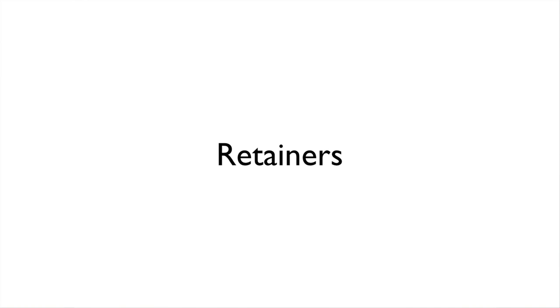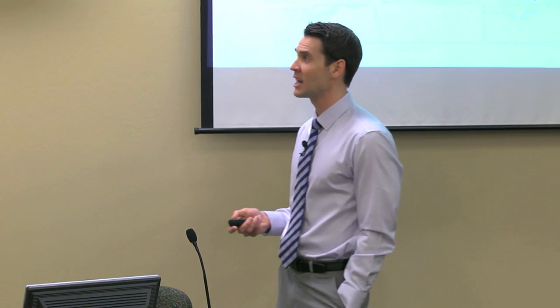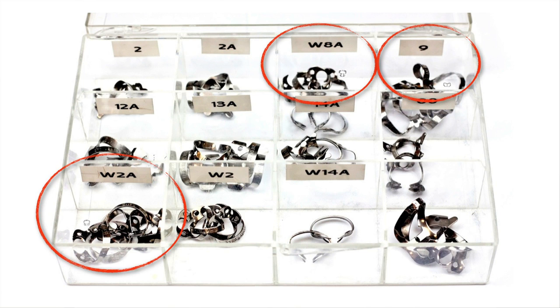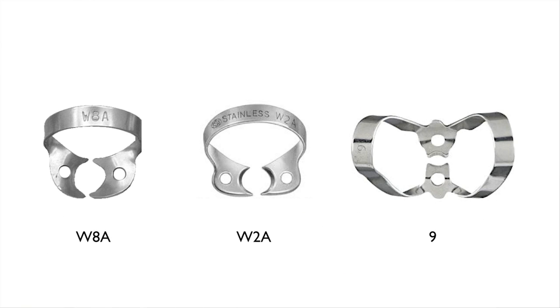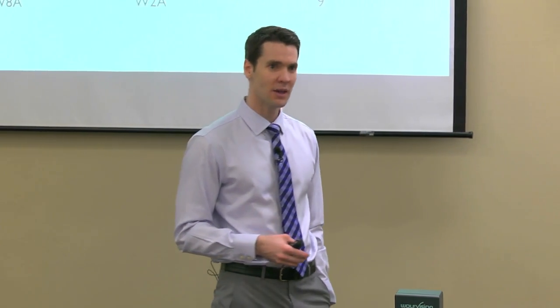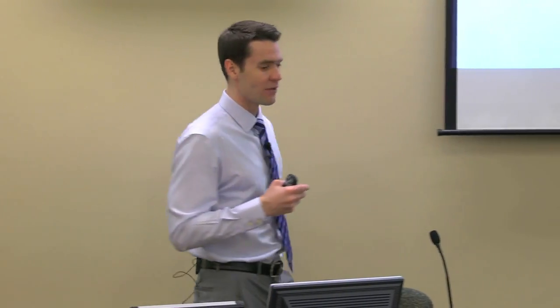Regarding types of retainers — I've heard a lot of clinicians say you have to use winged retainers, you have to use this specific retainer. I have a lot of retainers in my office. I prefer the wingless ones. There's not many cases I can't get through with three retainers: the W8A for molars, W2A for premolars, and the number nine for anterior teeth. I can treat 90% of my cases with one of these three. I don't call them clamps in my office — I ask that the terminology be 'retainer' because nobody wants a clamp on their tooth. They'd rather have a retainer. Terminology is a big psychological thing.